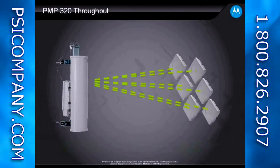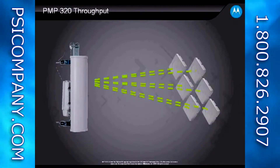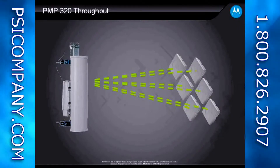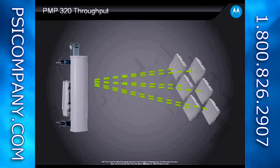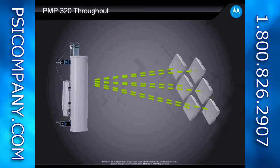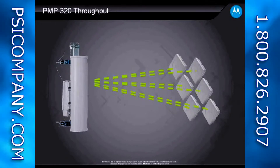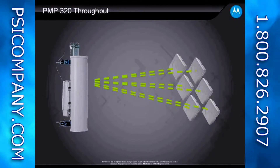The PMP320 is a high-throughput platform offering up to 45 megabits per second in a particular sector. To achieve that 45 Mbps, you need specific configuration settings: a 10 megahertz channel — though 7 and 5 MHz channels are also offered — a 75/25 uplink-downlink ratio, and best-effort service flows. These settings represent the best-case configuration for maximum throughput.